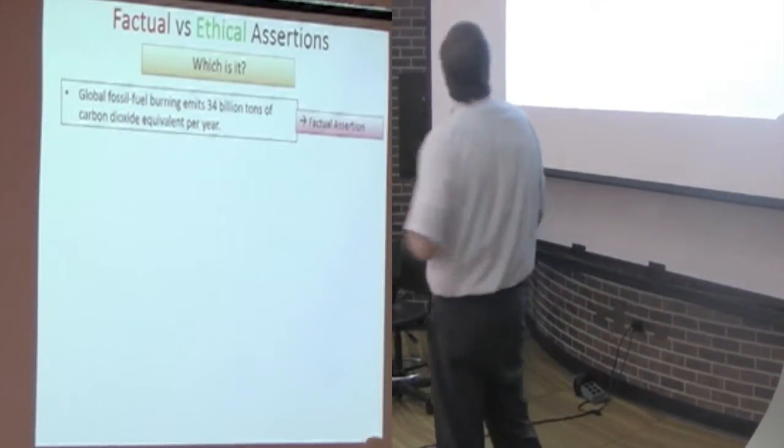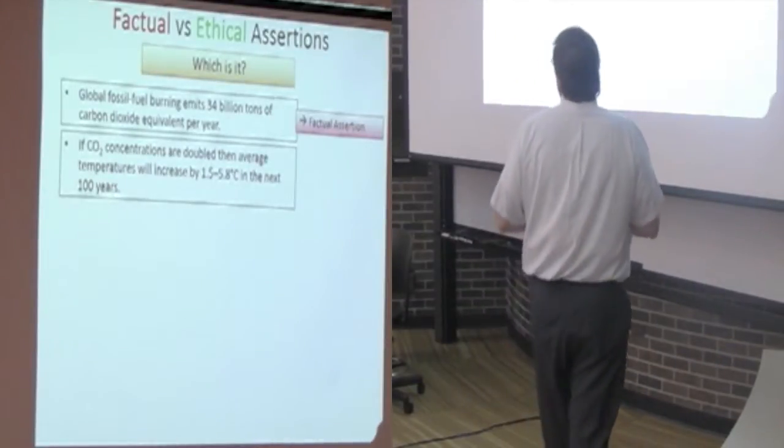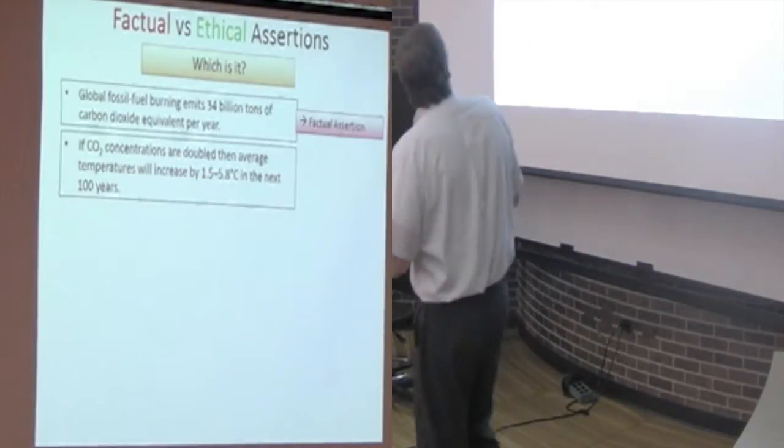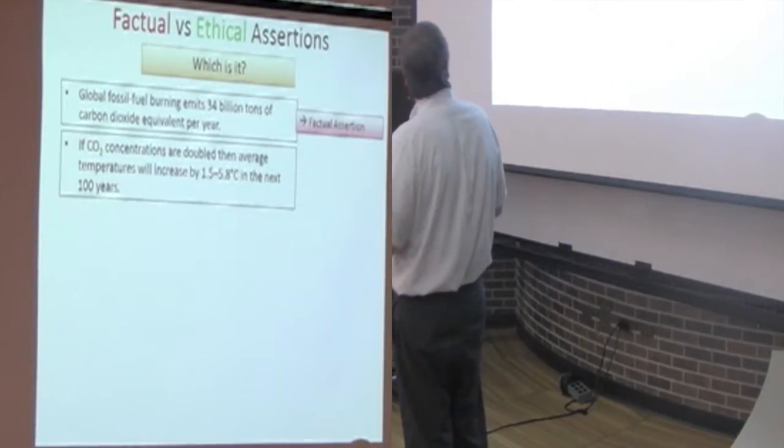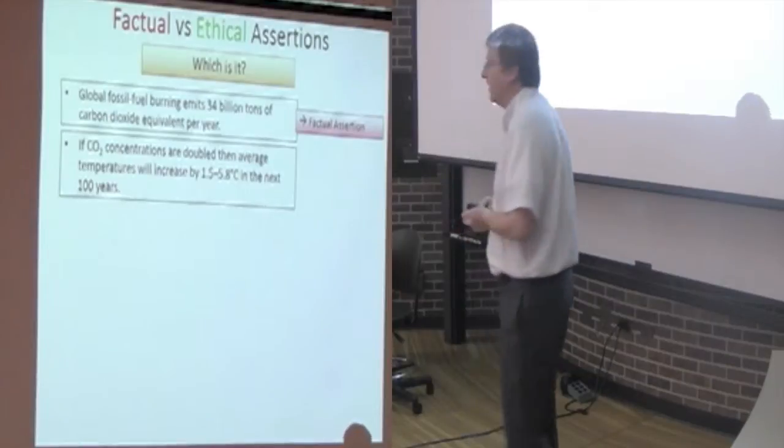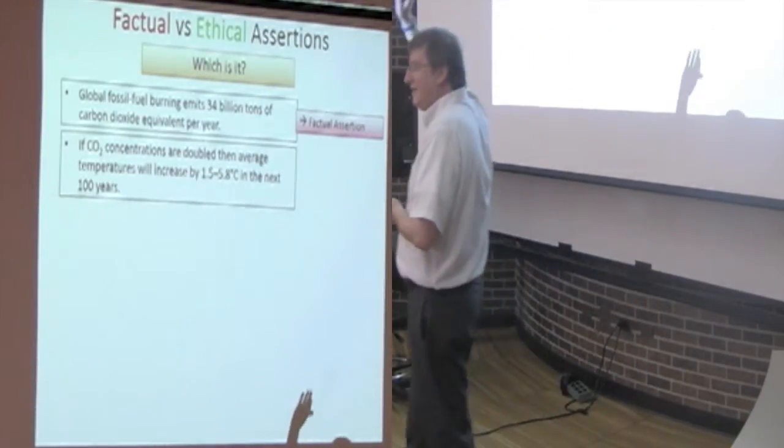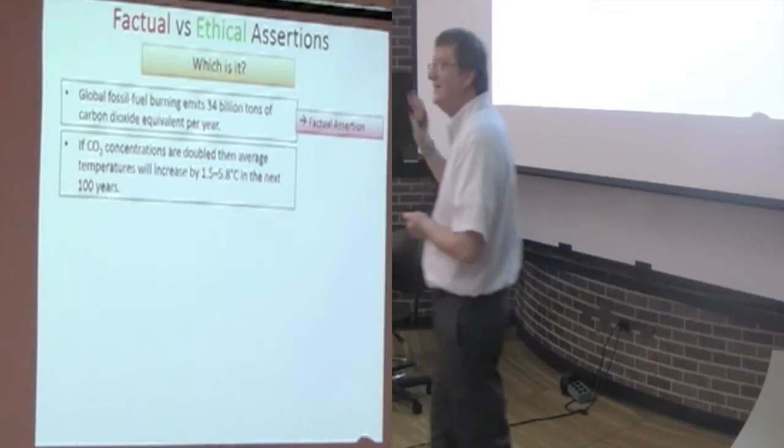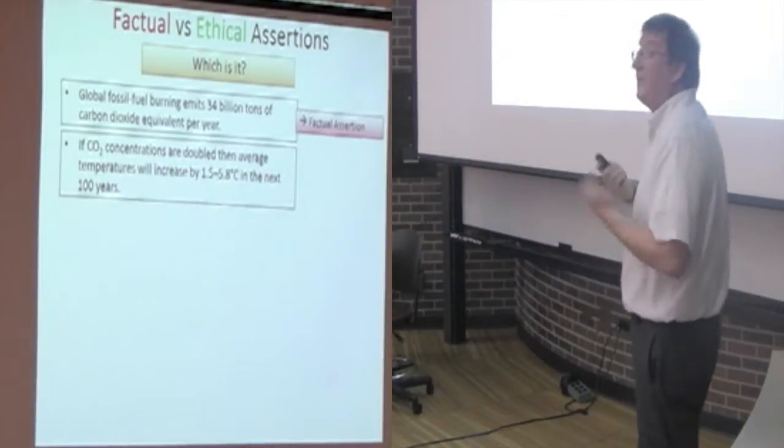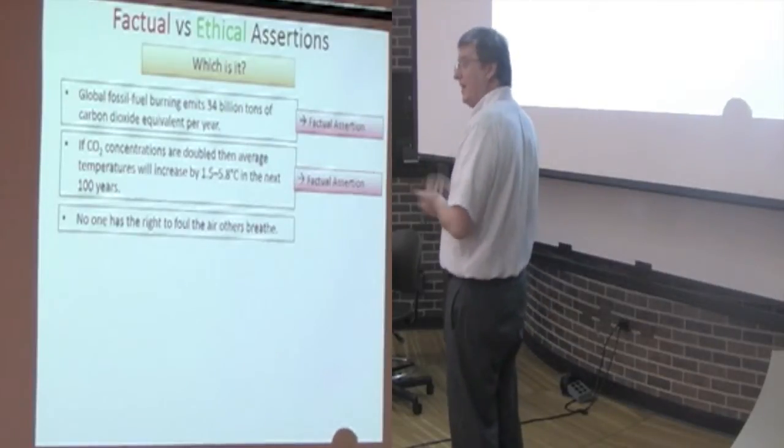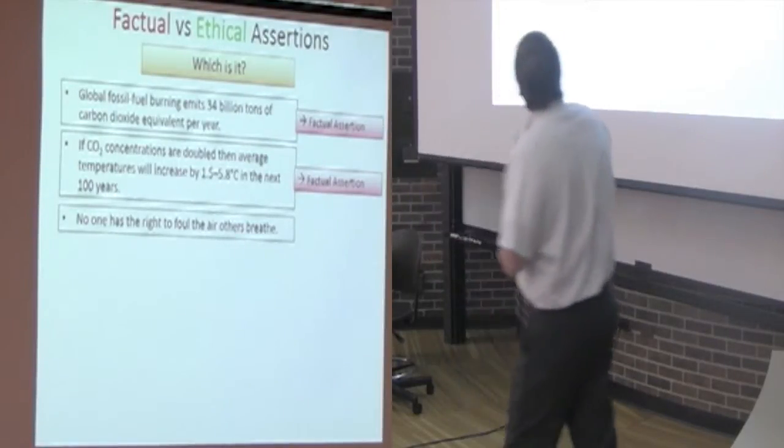Factual assertion. Here's another one. If CO2 concentrations are doubled, then average temperatures increase by some range, 1.5 to 5.8 degrees Celsius in the next hundred years. How many think it's factual? It depends. How many think it's ethical? Okay, so we think at least this is a factual type question that could be answered in terms of science and measurements and reasonable models.